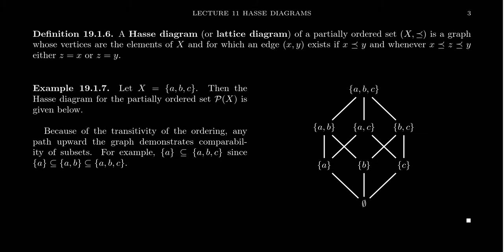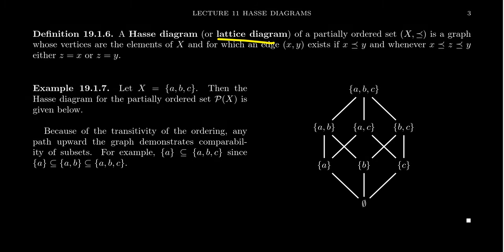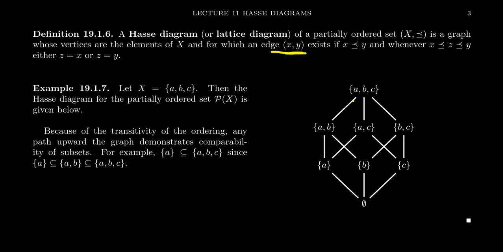In this video, I want to define the notion of a Hasse diagram, sometimes called a lattice diagram. A Hasse diagram of a partially ordered set — so x with its relationship forms a poset — is a graph whose vertices are the elements of x. We draw an edge between two vertices whenever x and y are related to each other, but there's no intermediate element that sits between them in terms of this relationship.